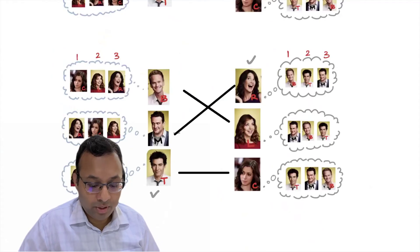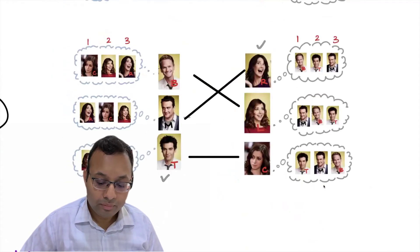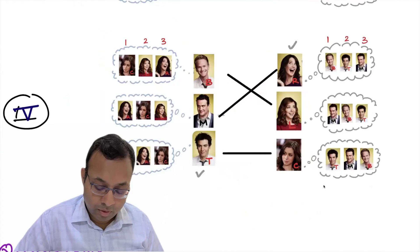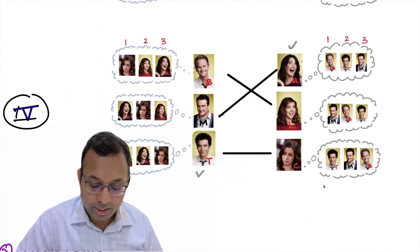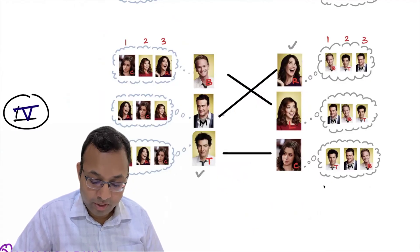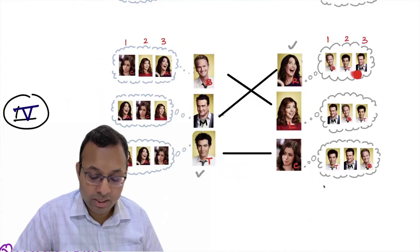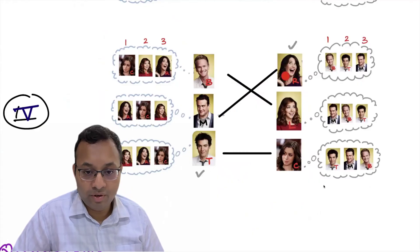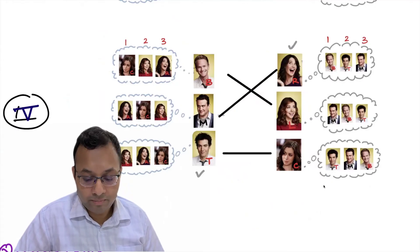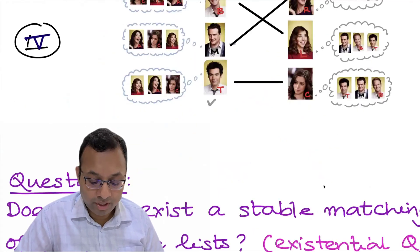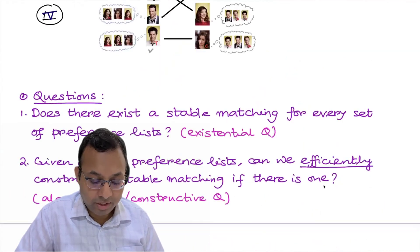Now look at the fourth example. Let's look at the case of Ted and Robin. Ted is currently matched with Christian and Robin is matched with Marshall. But in Ted's preference list, he prefers Robin over Christian, and Robin in her preference list prefers Ted over Marshall. In this case, this is not a stable matching because Ted and Robin will form an edge — they prefer each other over their current partners.